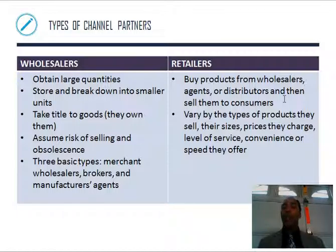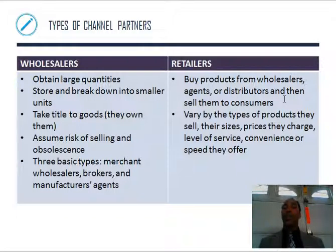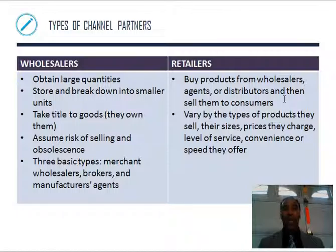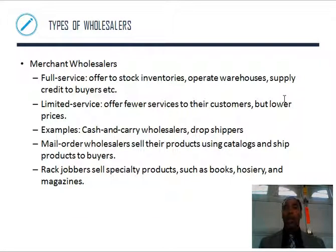Retailers buy products from wholesalers, agents, or distributors, and then sell them to consumers. They vary by the type of products they sell, their sizes, prices they charge, level of service, convenience, or the speed they offer. Amazon, for example — you typically get things very quickly. If you buy from somewhere else, maybe it doesn't get to your location as promptly.